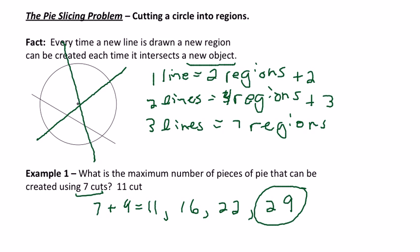You can keep going to get eleven. So you're going to add eight to twenty-nine to get thirty-seven, add nine to thirty-seven to get forty-six, add ten to get fifty-six, and then add eleven to get sixty-seven. And so for eleven cuts, you're going to have sixty-seven regions.